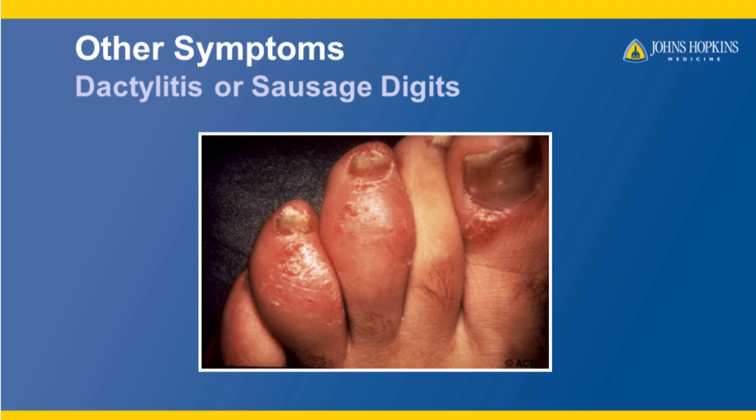Other symptoms of psoriatic arthritis include dactylitis, or sausage digits. The toes in this picture show how red and swollen these toes are, where they take on the shape of a sausage. They almost are the same shape at the top as they are at the bottom.